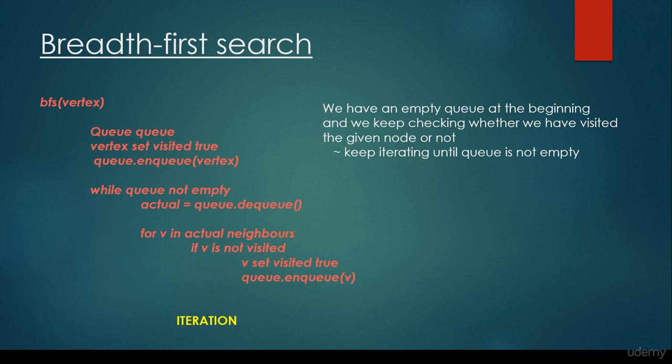At the beginning we set the starting vertex to be visited, we add it to the queue, and while the queue is not empty we dequeue — which means we take out a single vertex from the queue, which I named 'actual'. Then we visit all the neighbors of this actual vertex, denoted as 'w', and if 'w' has not been visited, we set it to visited and enqueue it. That is why we iterate as long as the queue is not empty.